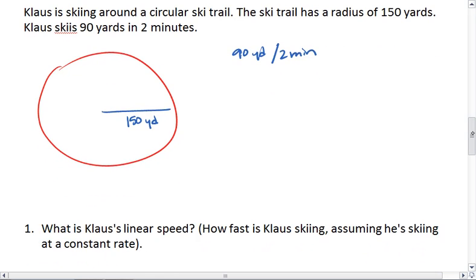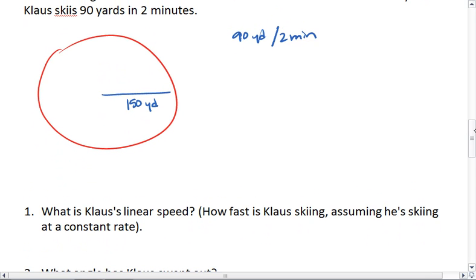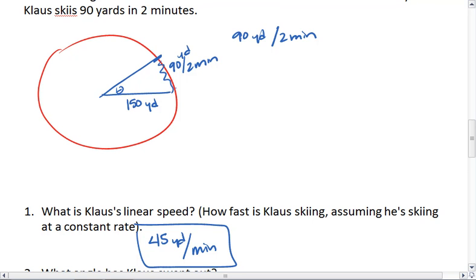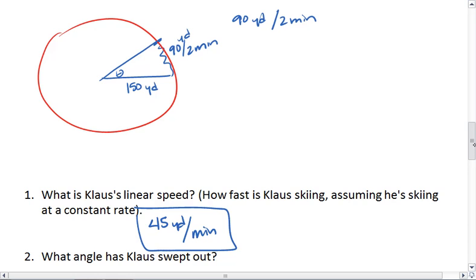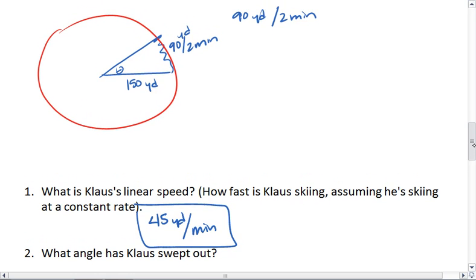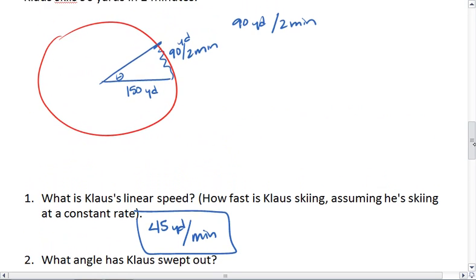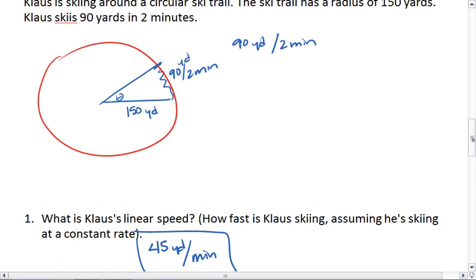First question was Klaus's linear speed. Well, if Klaus is skiing 90 yards in 2 minutes, that means he's skiing 45 yards per minute. So he covers 90 of these yards in 2 minutes. What angle has Klaus swept out?